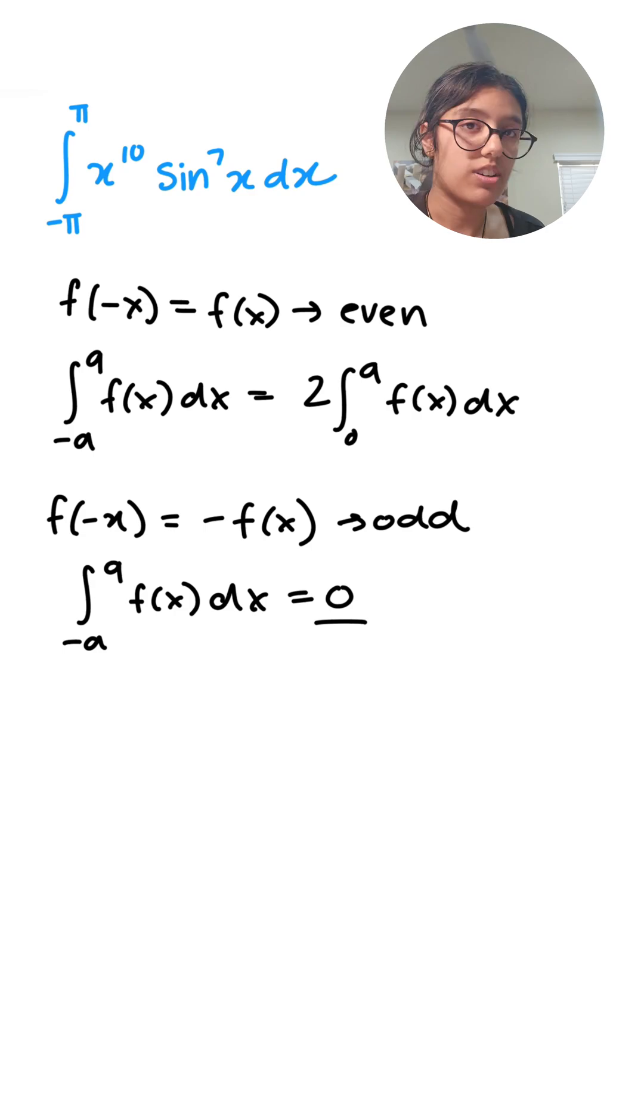So now what we have to do is we need to see if f of x, which is x to the power of 10 times sine to the power of 7x, is an even or odd function.